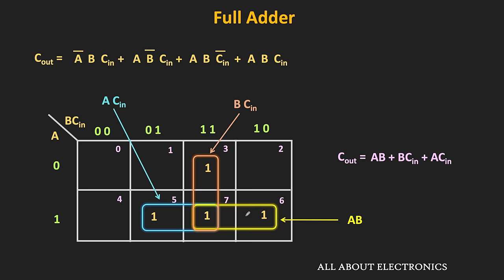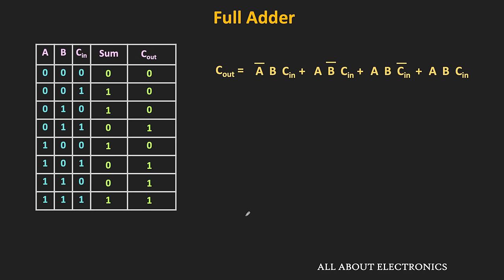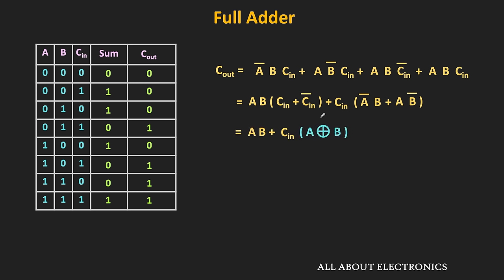Apart from that, we can also write Cout in a different way. In this expression, the last two terms share A dot B as common, and in the first two terms Cin is common. Taking Cin outside gives Cin dot (A-bar dot B plus A dot B-bar), which corresponds to A XOR B. And the A dot B term remains, noting that Cin plus Cin-bar equals 1. So we can write this expression as A dot B plus Cin dot (A XOR B). That is another way of writing the carry output, and why this form is useful will become clear very soon.